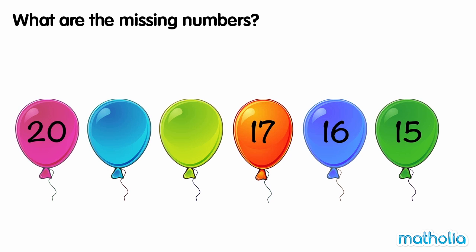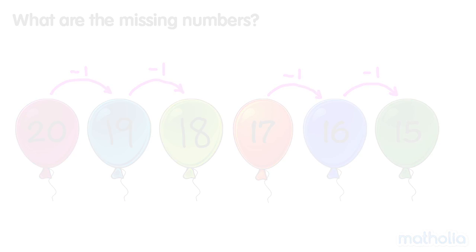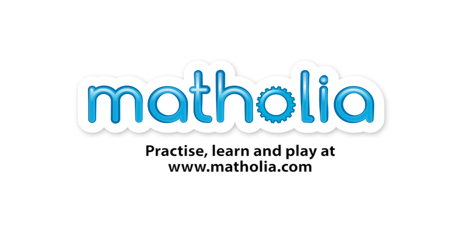What are the missing numbers? 17 minus 1 is 16, 16 minus 1 is 15. In each step the numbers go down by 1. 20 minus 1 is 19, 19 minus 1 is 18. The missing numbers are 19 and 18.